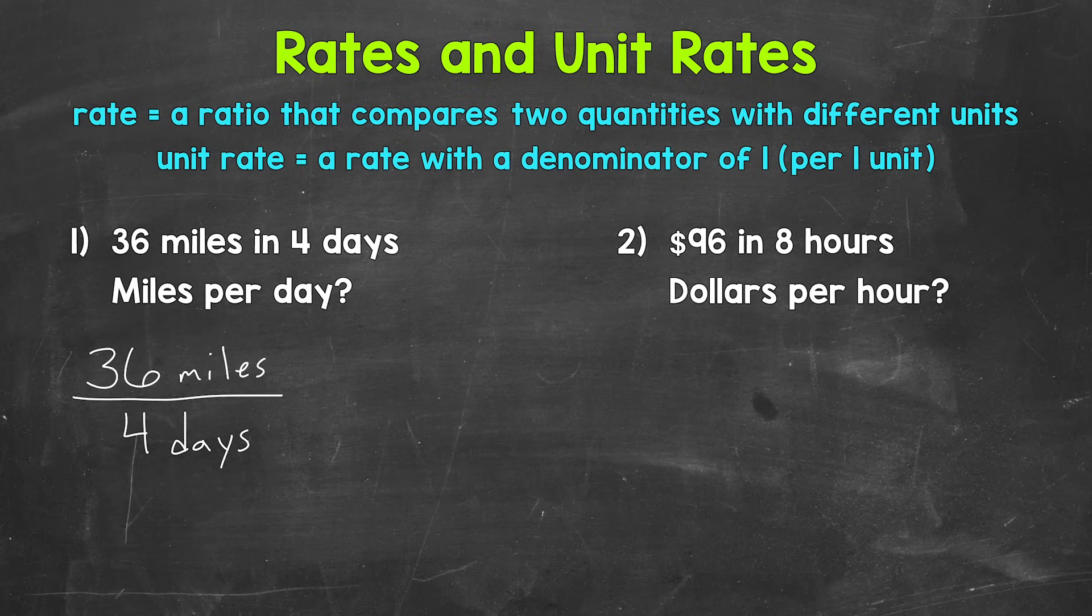Now, let's find the unit rate. Unit rates always have a denominator of 1. We want per 1 unit. In this case, we want how many miles per 1 day. Let's do this by dividing our denominator by 4. That will give us a denominator of 1, representing 1 day. So 36 miles in 4 days is going to equal... Well, again, we need to divide by 4 in order to get that denominator of 1. 4 divided by 4 is 1, and we need to label. So this is 1 day.